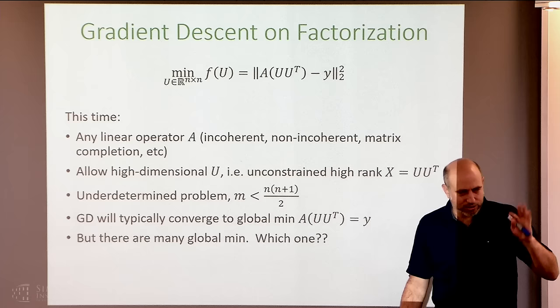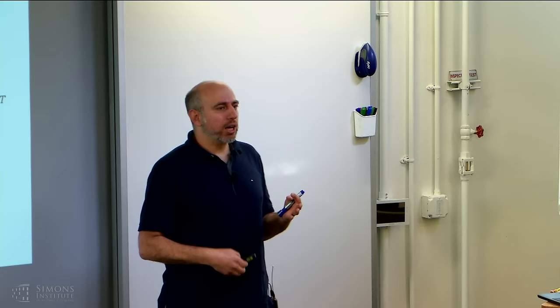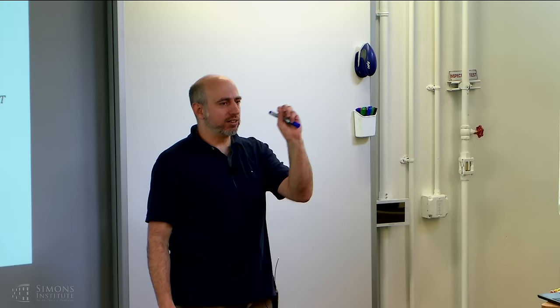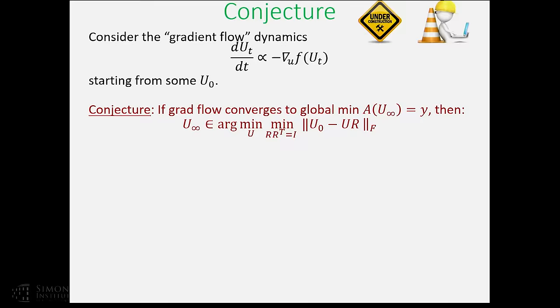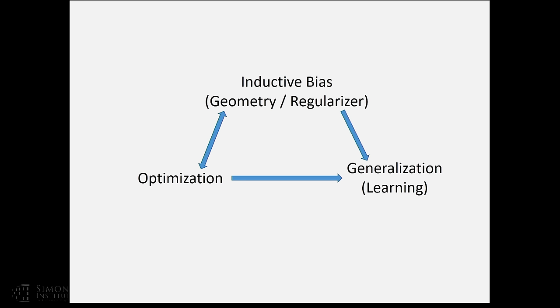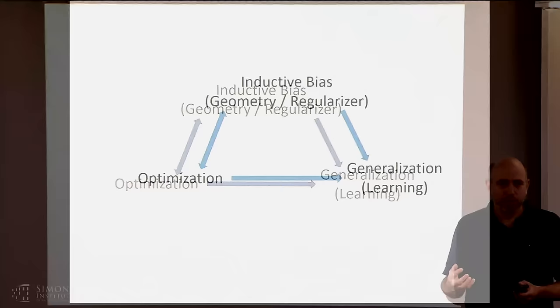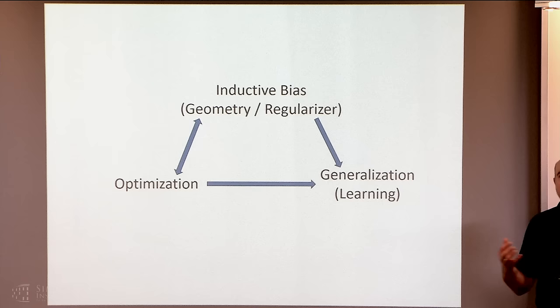The other interesting question is what the implicit bias is coming from. For least squares, it's easy to see: doing gradient descent on underdetermined least squares starting from zero, you converge not just to any zero-error solution but to the minimum norm zero-error solution. For matrix factorization, if you minimize over full-dimensional U and V without constraining the rank, the problem is way underdetermined — yet gradient descent finds a solution that generalizes well. We now mostly understand why this happens and where you converge to.